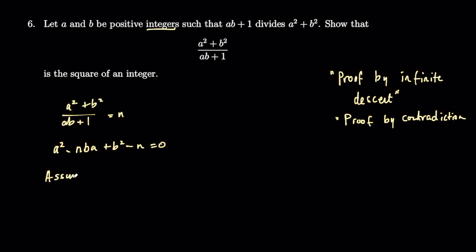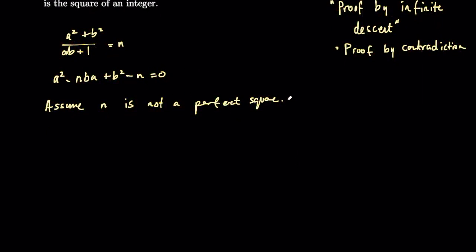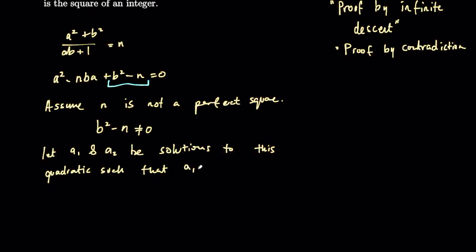And then we're going to assume n is not a perfect square, and we're going to show there's a contradiction there. First thing to say is that if n is not a perfect square, this part on the end of this quadratic, this is an equation in quadratic form in terms of a, a squared minus something a minus a constant. This part here cannot equal 0. So b squared minus n cannot equal 0. And we can also say there'll be two solutions to this quadratic, and let's call those a1 and a2. So we'll say let a1 and a2 be solutions to this quadratic such that a1 is less than a2.